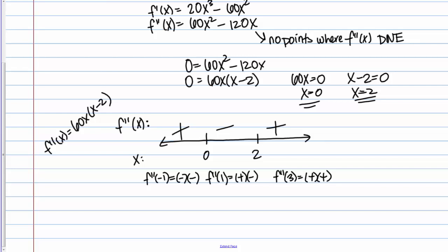What we've done so far is found the sign of the second derivative on each of three intervals. What does this actually tell us about the function? This tells us about the concavity of the function.